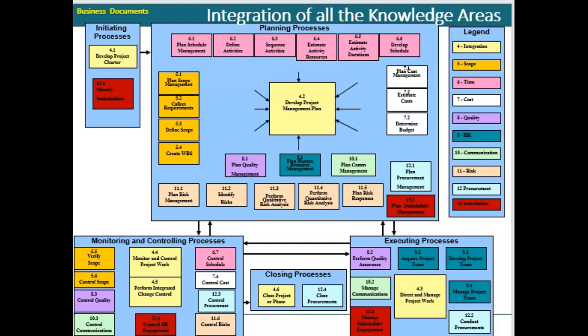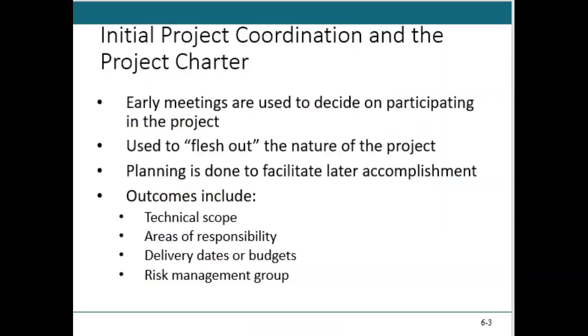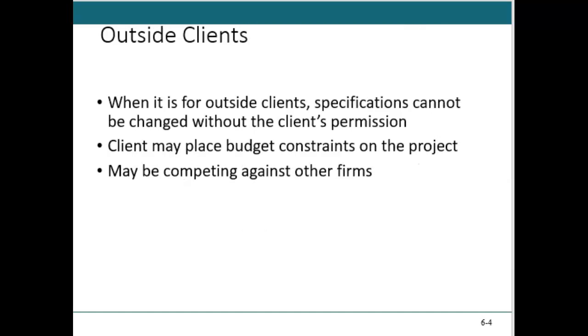I also want to point out that in weeks one and two, we talked about business documents. Notice that's in the top left-hand corner of the slide, because business documents aren't part of the project — they're done with the C-suite and the sponsor. They give you your business case, which has your feasibility study and your benefits management plan. Those documents start and kick off your project with the project charter. So the initial project coordination starts with the project charter. This is where we flesh out between those business case documents, but before the project plan kicks off. To do that, we're going to have to talk initially to some key stakeholders. We talked about stakeholders in week two — very important.